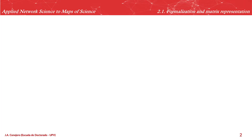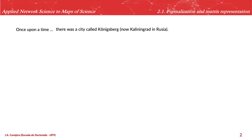First, some introduction about the beginning of graph theory. The beginning of graph theory is in the 18th century, when there was the problem of the Königsberg bridges, which was solved by Euler.